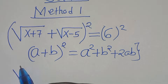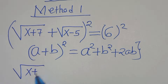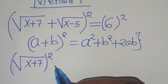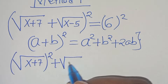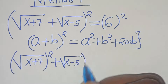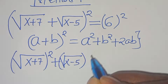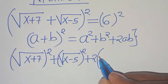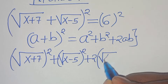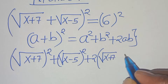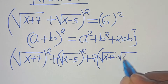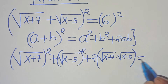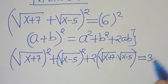Applying this algebraic identity, we get: the square root of x plus 7, raised to the power of 2, plus the square root of x minus 5, raised to the power of 2, plus 2 multiplied by the square root of x plus 7, multiplied by the square root of x minus 5 — this is equal to 6 squared, which is 36.